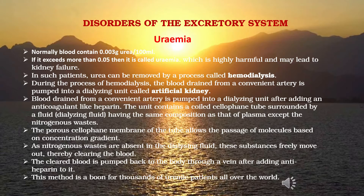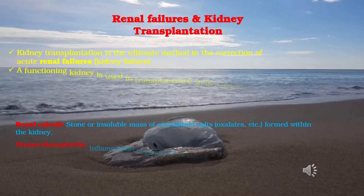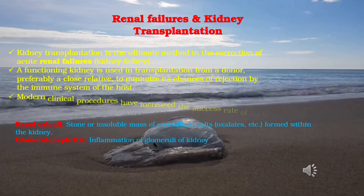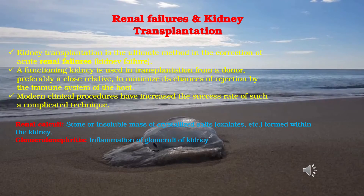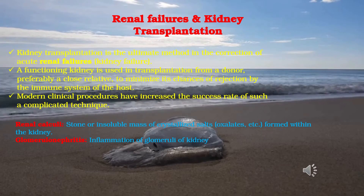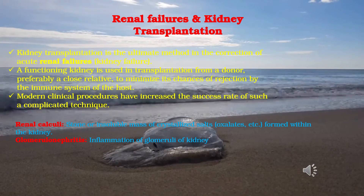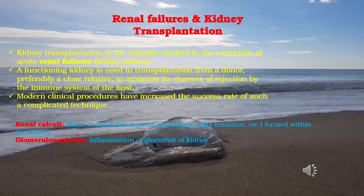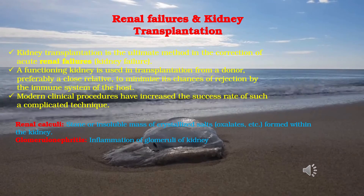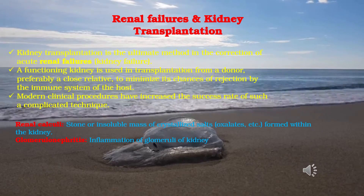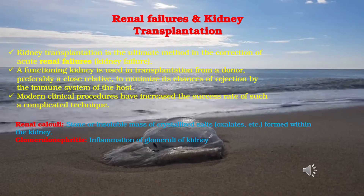Kidney transplantation is the ultimate method for correction of acute renal failure. A functioning kidney from a donor, preferably a close relative, is used to minimize chances of rejection by the host's immune system. Modern clinical procedures have increased the success rate of this complicated technique. Renal calculi are stones or insoluble masses of crystallized salts such as oxalates, formed within the kidney. Glomerulonephritis is inflammation of the glomeruli of the kidney.